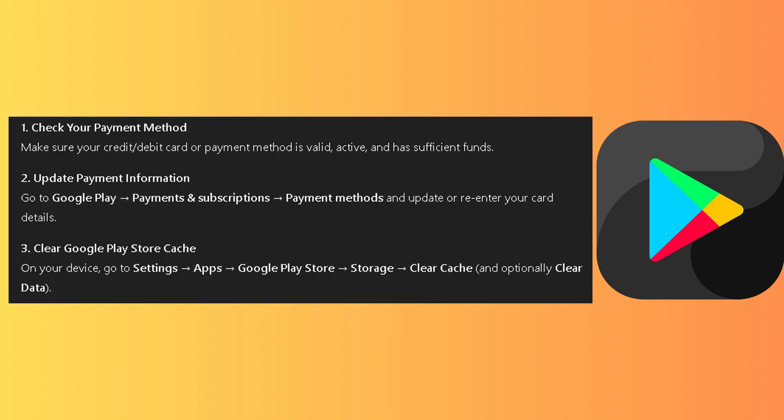Update your payment information. Go to Google Play, Payment and Subscription, then Payment Method. Then update or re-enter your card details.